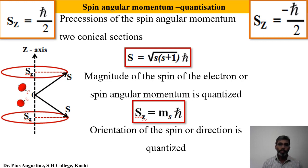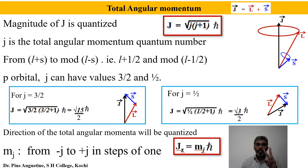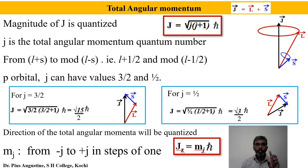One very important point to note: in quantum systems like electrons, angular momentum is a conserved quantity, but the two different kinds of angular momenta — orbital and spin — need not be conserved separately. Since there are two different vectors, their vectorial addition gives the total angular momentum of the electron, and it is this total angular momentum that should be conserved in the electron system.